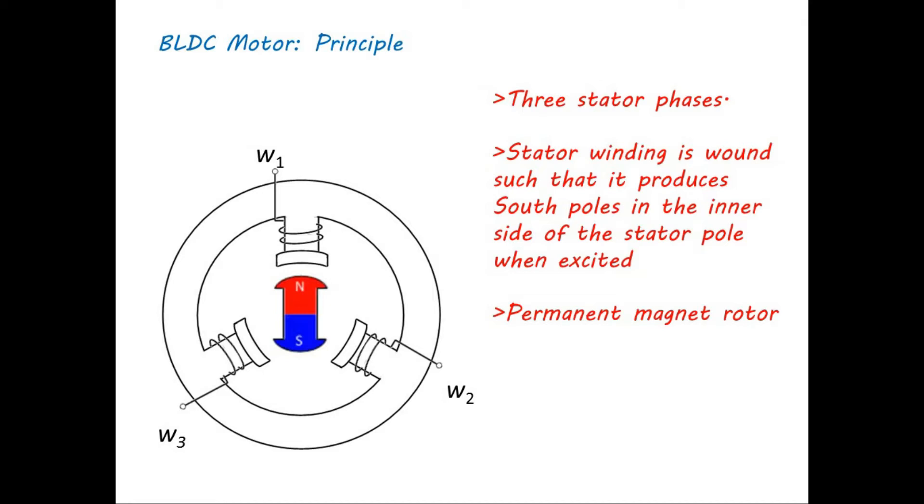From this rotor position shown here, if we excite the winding W2, south pole is created under W2 winding of the stator. The south pole of the stator attracts rotor north pole. At the same time, south pole of the stator repels rotor south pole. As a result of this, rotor rotates 120 degrees in the clockwise direction.